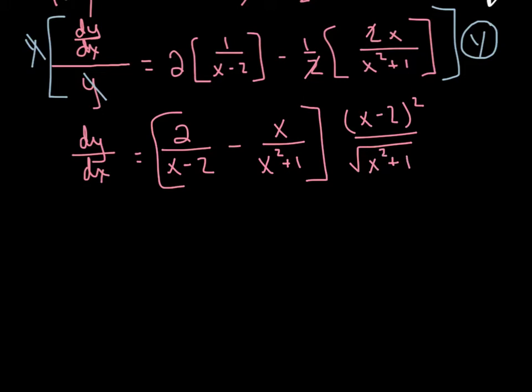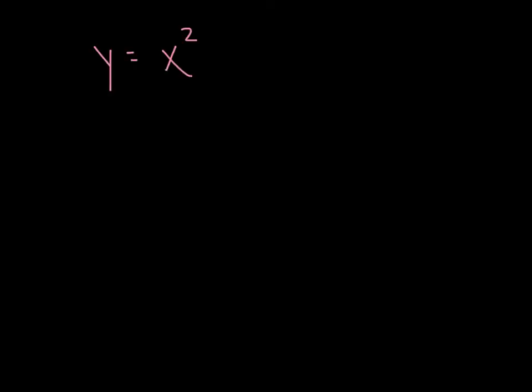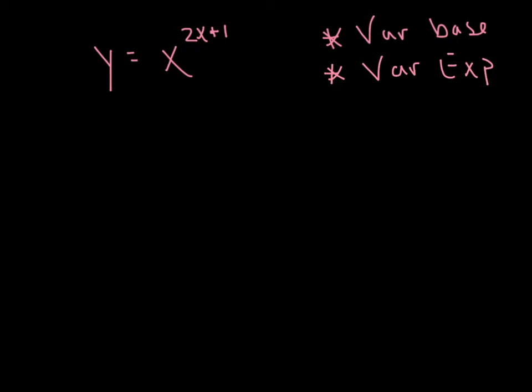I'm going to stop right there — if they wanted the slope at x equals 0 or x equals 3 or whatever, we'd be ready to find it. Now the other time logarithmic differentiation really comes in handy is on a function like x raised to the (2x plus 1) power. This is a really wild function because we've got a variable in the base and a variable in the exponent.